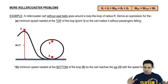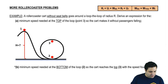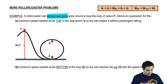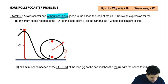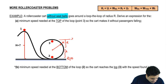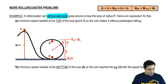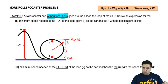This example is going to be a four-part example — I'll ask four different things in the same situation. A roller coaster cart without seatbelts goes around a loop-de-loop of radius R. Without seatbelts means the person inside could fall, and that's important. The loop has radius R, so the bottom is height 0, and the top is height 2R because we're at the top of the circle.